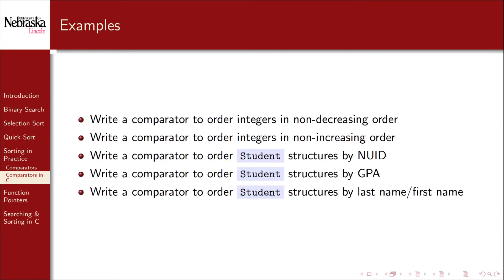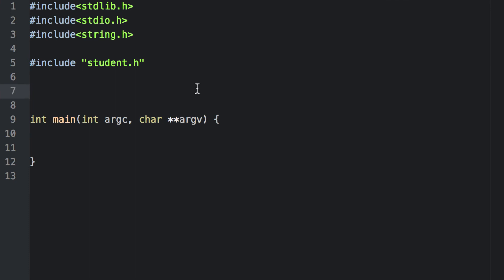To demonstrate these ideas, let's write several comparator functions. We'll write a comparator function to order integers in non-decreasing order, a comparator to order integers in non-increasing order, and then three comparators for students. We'll order student structures by their NUIDs, their GPAs, and then by their last names and first names. Non-decreasing can be thought of as increasing; technically we use non-decreasing because we could have elements that are equal. Now to start out, we're going to write that comparator to order integers in non-decreasing order.